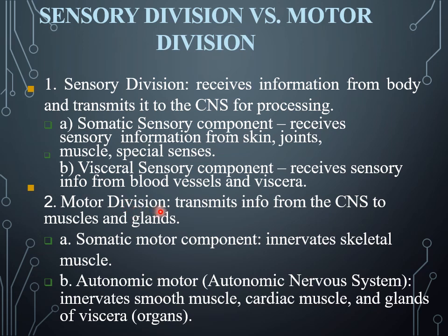The second division of the nervous system is the motor division. The motor division transmits information from the central nervous system towards the muscles and glands. It contains the somatic motor component, which consists of innervation of skeletal muscle, and second is the autonomic motor component, which innervates smooth muscle, cardiac muscle, and glands of the vascular organs.